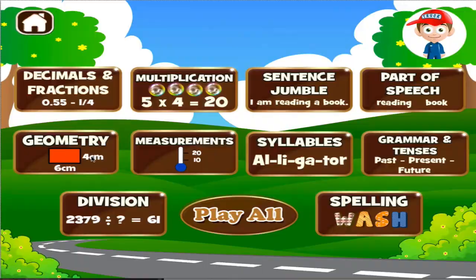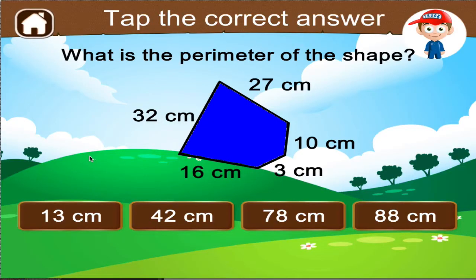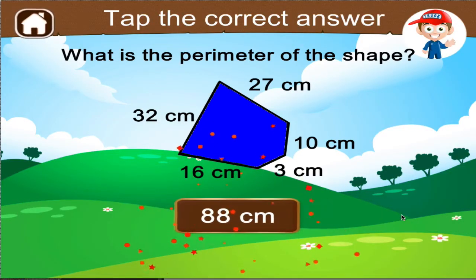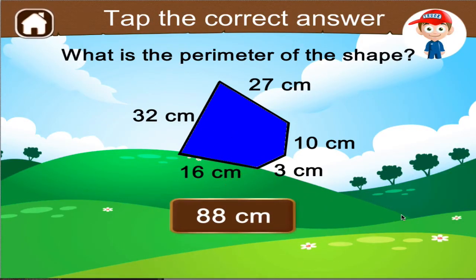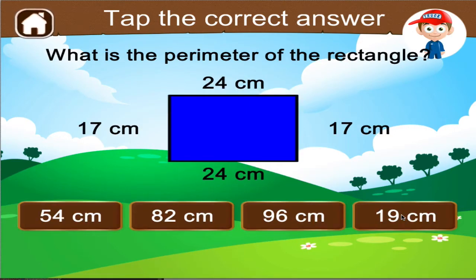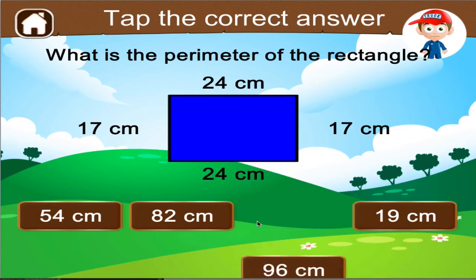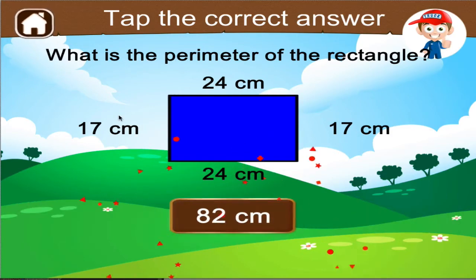What is the perimeter of the shape? Right on. What is the perimeter of the rectangle? That's not it. Right on.